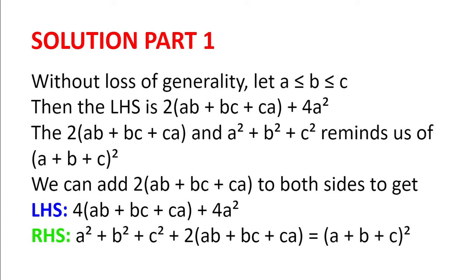Now the 2 multiplied by AB plus BC plus CA and the A squared plus B squared plus C squared could remind us of A plus B plus C squared. So we can add 2 multiplied by AB plus BC plus CA to both sides to get on the left-hand side 4 multiplied by AB plus BC plus CA plus 4A squared, and on the right-hand side A squared plus B squared plus C squared plus 2 multiplied by AB plus BC plus CA, which is equal to A plus B plus C squared.